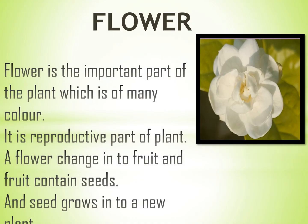Flower. Flower is an important part of the plant and comes in many colors. It is the reproductive part of the plant. A flower changes into fruit, and fruit contains seeds. A seed grows into a new plant.